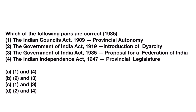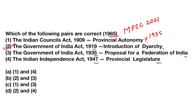This question was asked in 1985 UPSC IAS prelims, then again repeated in MPSC 2021. The pairs given are: Indian Councils Act 1909 – Provincial Autonomy; Government of India Act 1919 – Introduction of Diarchy; Government of India Act 1935 – Proposal for a Federation of India; Indian Independence Act 1947 – Provincial Legislature. We have to find the correct pairs. Provincial Autonomy was given in the 1935 Act, so that pair is not correct. Diarchy in 1919 is correct. Proposal for a Federation of India in 1935 is correct. So the answer will be 2 and 3.